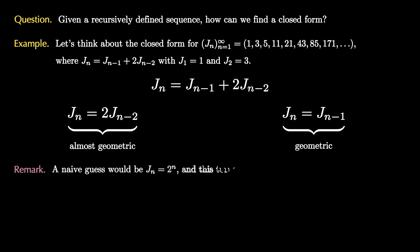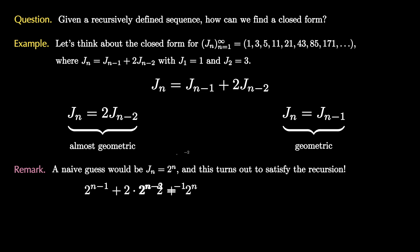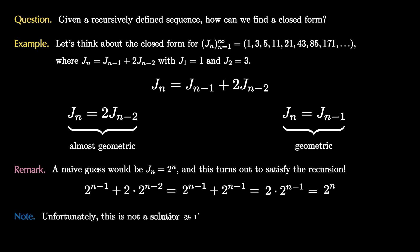Since we see the repeated multiplication by 2, a naive guess would be that j_n equals 2 to the n. It turns out this sequence does satisfy the recursion: 2^{n-1} plus 2 times 2^{n-2} equals 2^{n-1} plus 2^{n-1}, which is just 2 to the n. Unfortunately, this is not a solution because it fails to satisfy the initial conditions of the j sequence.